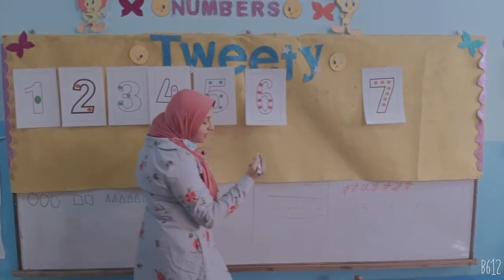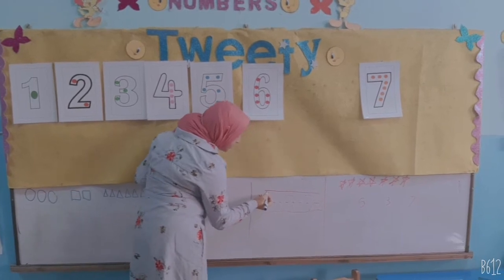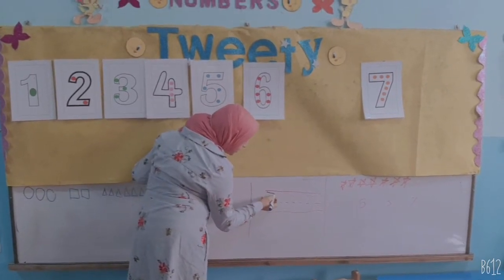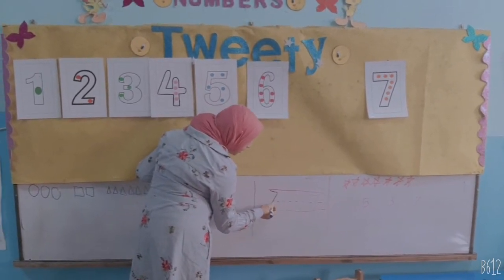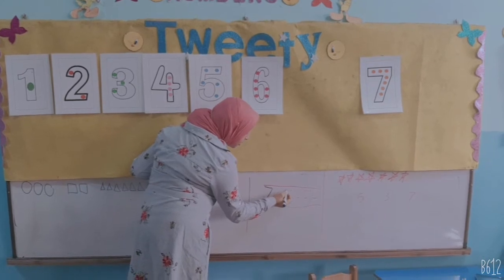How can we write number 7? Start from the dot. Let a line across. Big line slide down.